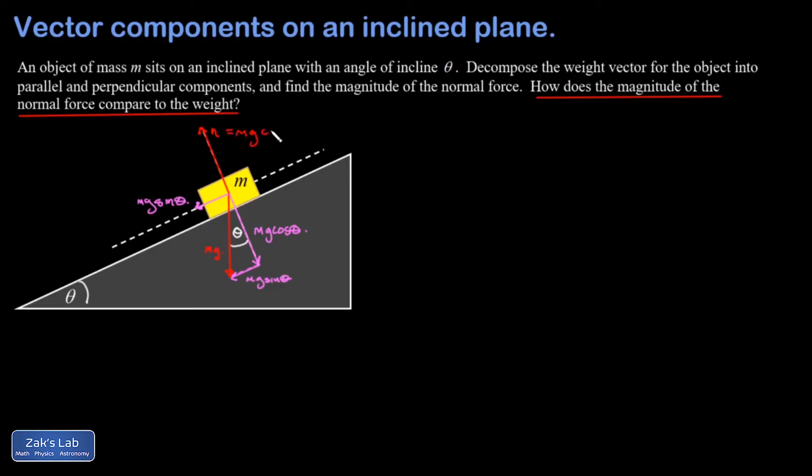Finally, we're asked this concept question: how does the magnitude of the normal force compare to the weight? Back when I was doing my decomposition, the perpendicular component of the force of gravity is just one of the legs of a right triangle where the weight is the hypotenuse. The hypotenuse is always longer than either leg, so the weight is bigger than mg cosine theta, which means it's bigger than the normal force.